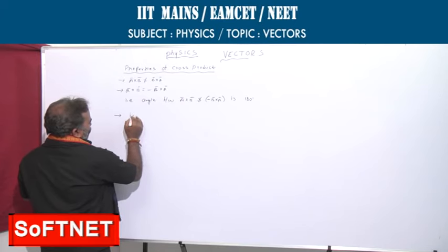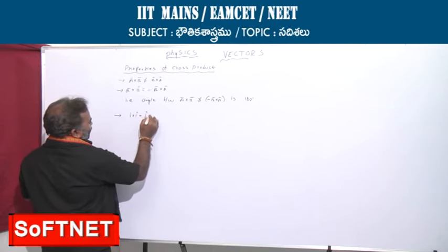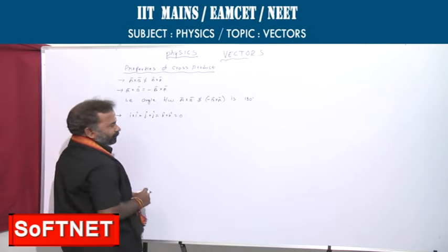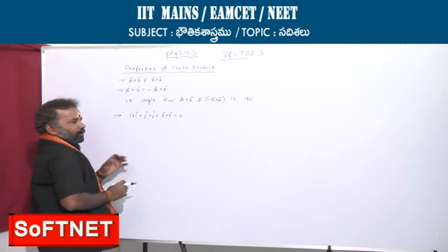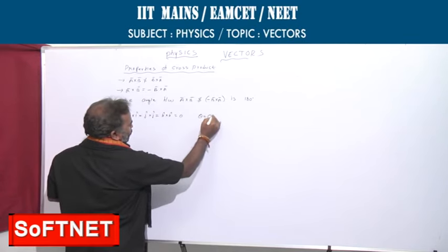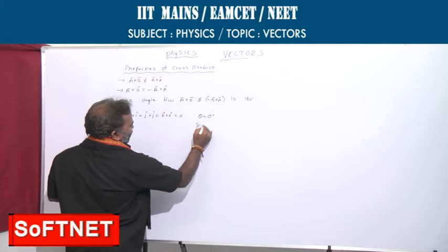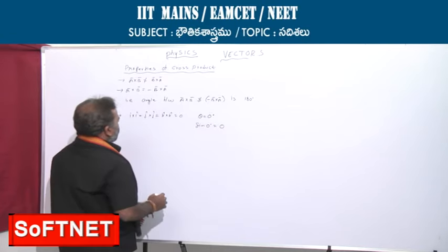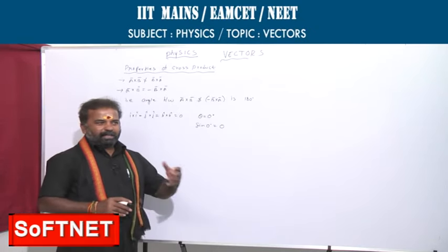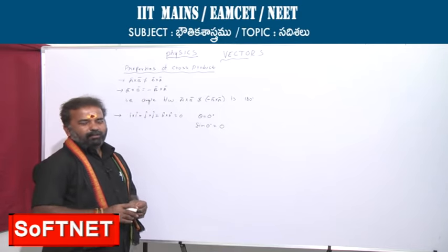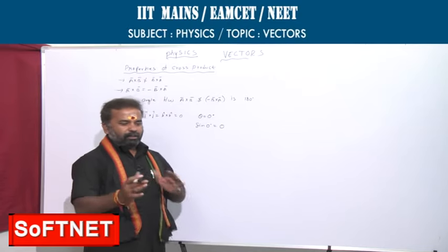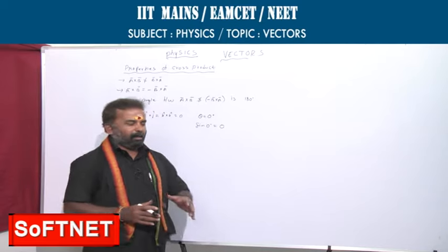î cross î equals ĵ cross ĵ equals k̂ cross k̂ equals 0. Cross product of same unit vectors is equal to 0, because theta is 0 degrees and sine 0 degrees is 0. Therefore cross product of î×î, ĵ×ĵ, k̂×k̂ is 0. Whereas in dot product it is the maximum value: î·î = 1, ĵ·ĵ = 1, k̂·k̂ = 1. That is the difference between cross product and dot product.